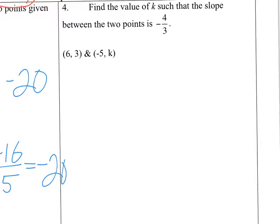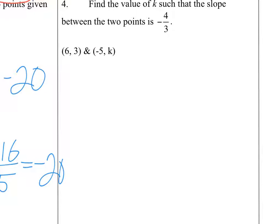And finally, we have to find a value of k to make this true. So for this one, I will use the slope formula. So there's my x1, y1, x2, y2. So I'm going to do k minus 3. And on the bottom, I'm going to have negative 5 minus 6. And the goal of this is to make a slope equal to negative 4 thirds.